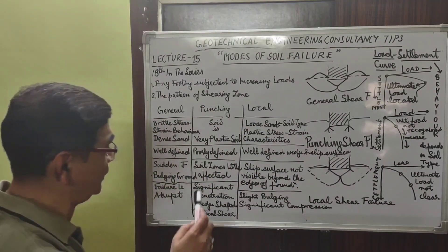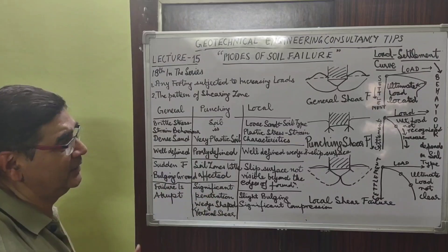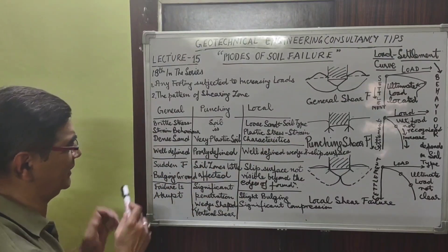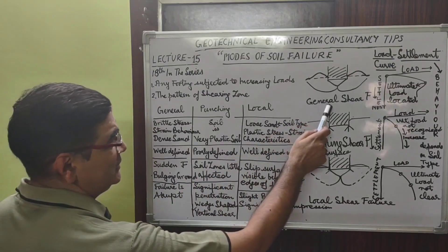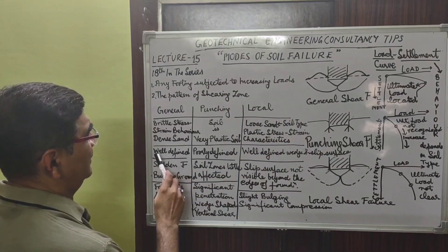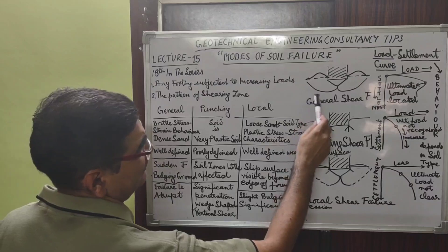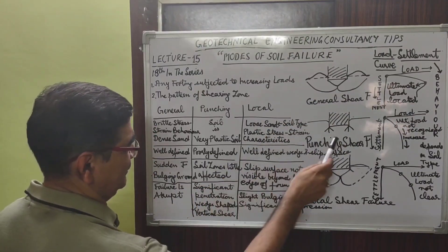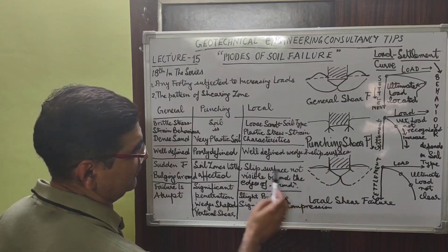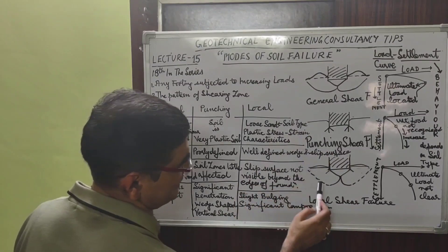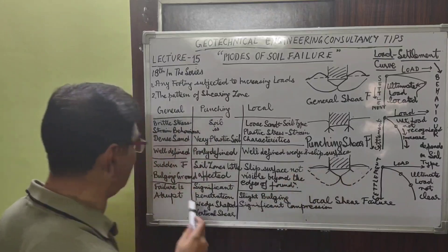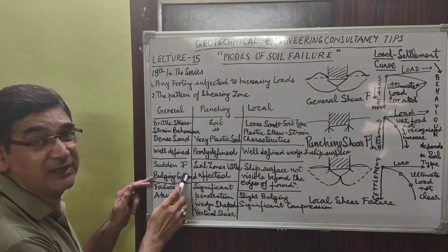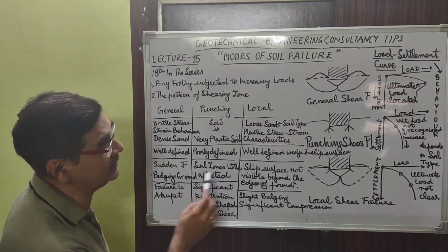Other comparative factors among the three kinds of failures: in general shear failure, the slip surface is very well defined. In punching shear failure, it is poorly defined. In local shear failure, you have well-defined wedge and slip surfaces.